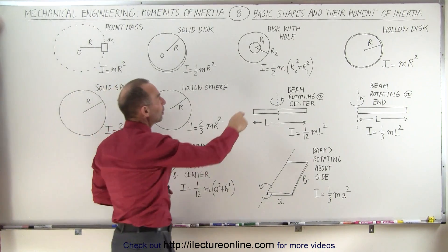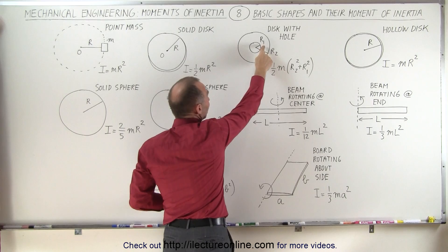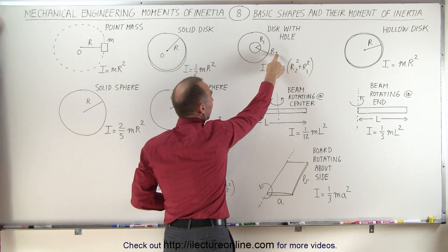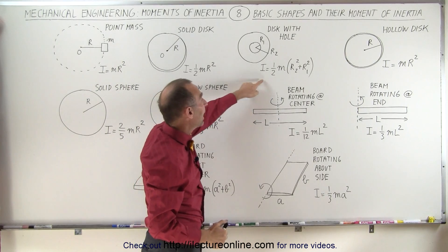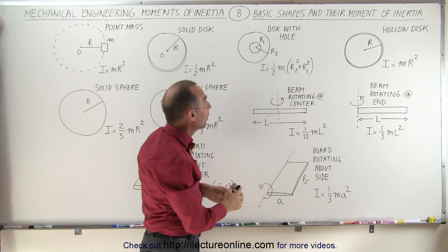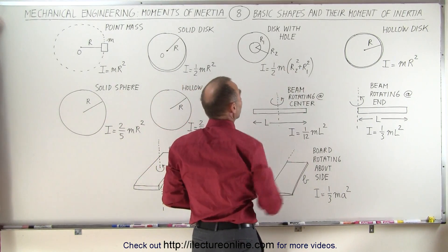If it's a disk with a hole where the inner radius is R1 and the outer radius is R2, then the moment of inertia will be 1/2 m times the sum of R1 squared and R2 squared.